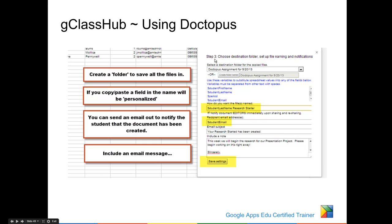At this point, in step three, I can have it create a folder that's auto-named Doctopus assignment for today's date, or I can name the folder where a copy of all the documents will be held. Here I can select how I want the file named — if I copy and paste the field for dollar sign student last name, it will individually name the document their last name plus anything I add at the end. I can send an email to the student by checking the box to notify document editors immediately upon sharing and resharing, add a subject and a note, and then save my settings.